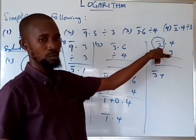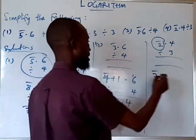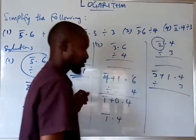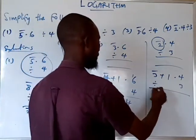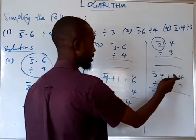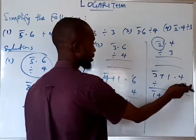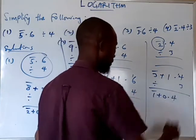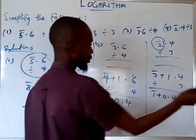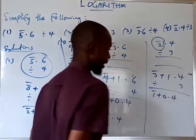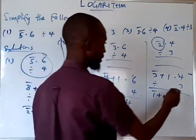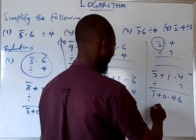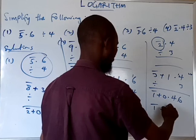So bar 3 becomes bar 3 plus 1 point 4, divided by 3. We can see division is now possible. 3 into bar 3 gives bar 1, then 3 into 1 is not possible so zero point, and 3 into 14 gives 4 with a remainder of 2. We add a zero to make 20, and 3 into 20 gives 6 with a remainder of 2 again — so this will continue. Our answer is bar 1.4 recurring.